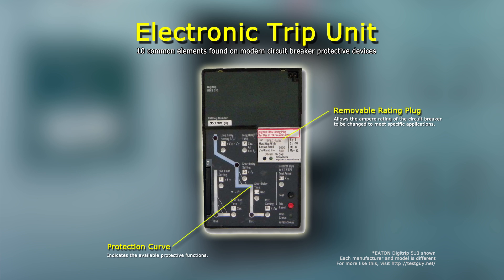Number 2: Protection Curve. Time current curves are used to show the amount of time required for a circuit breaker to trip at a given overcurrent level. Similar to a mimic bus found on a switchgear assembly, some trip units will show a representation of the protection curve on the device itself.